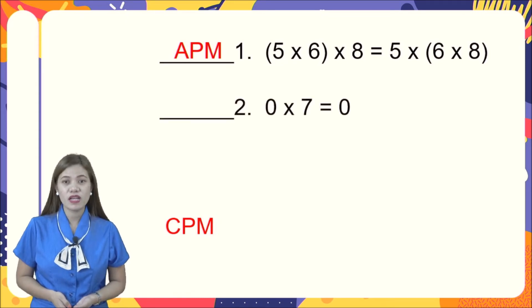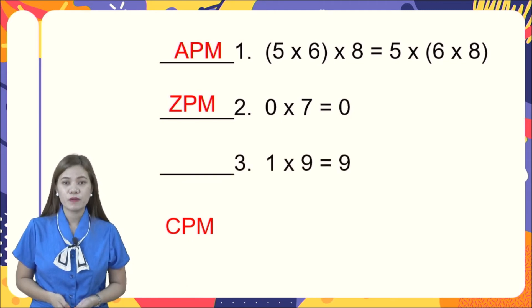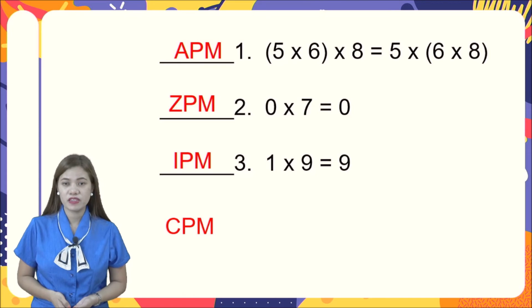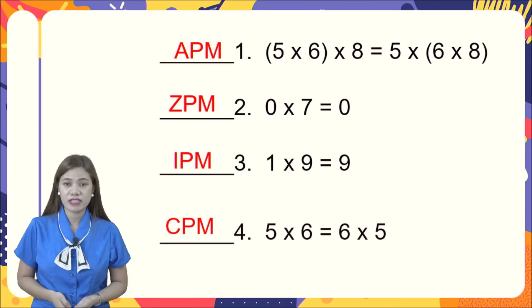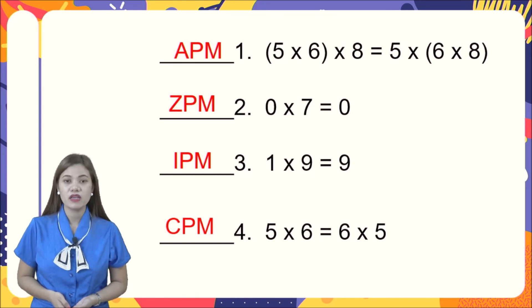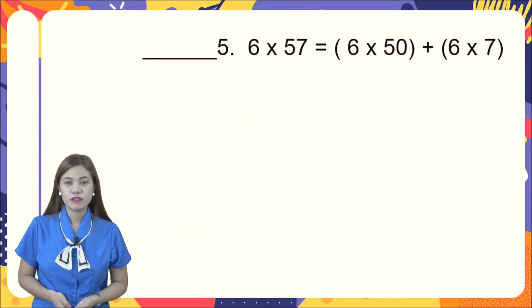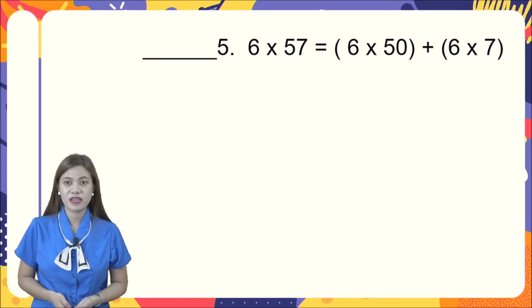Number two: zero times seven is equal to zero. The property is zero property of multiplication, or ZPM. Number three: one times nine is equal to nine — that is identity property of multiplication. Number four: five times six is equal to six times five. We changed the factors but the answers are the same — 30 — so this is commutative property of multiplication.